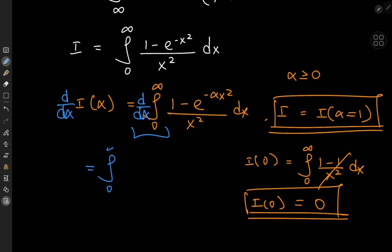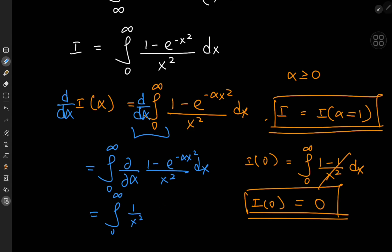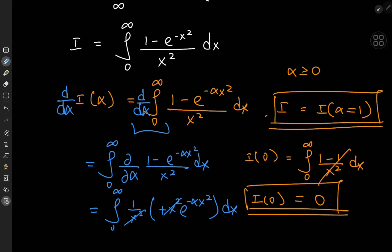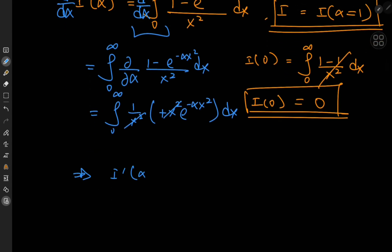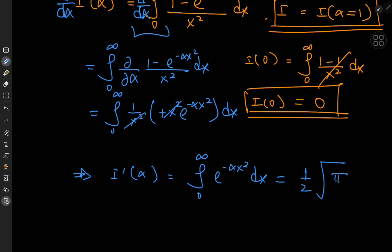Because of the switch, we now take the partial derivative with respect to α of (1 − e^(−αx²)) / x² dx. The 1/x² term is a constant with respect to α. The derivative of 1 is 0, so we have a negative sign times e^(−αx²) times −x² from the chain rule. After cancellation, the derivative of I with respect to α equals the integral from 0 to infinity of e^(−αx²) dx, which is the Gaussian integral, evaluating to (1/2)√(π/α).